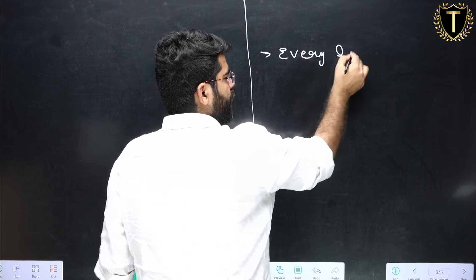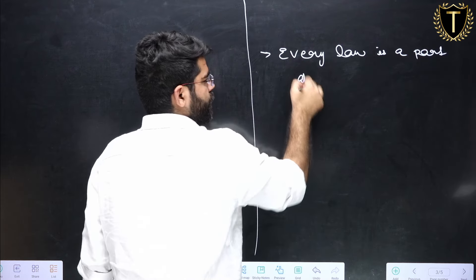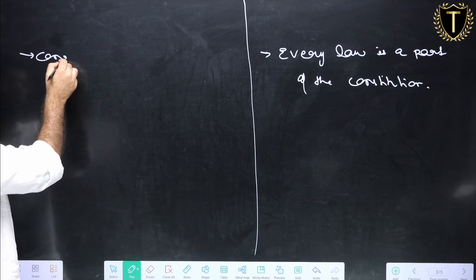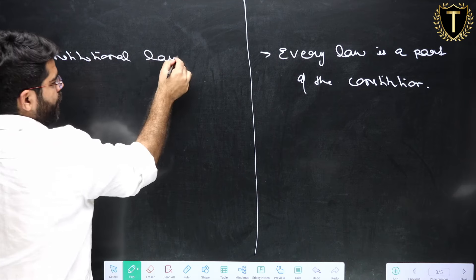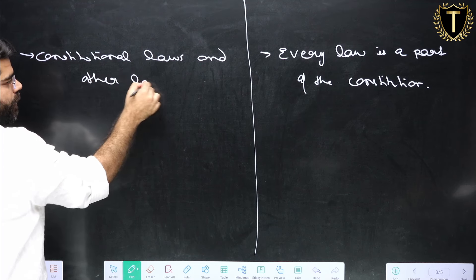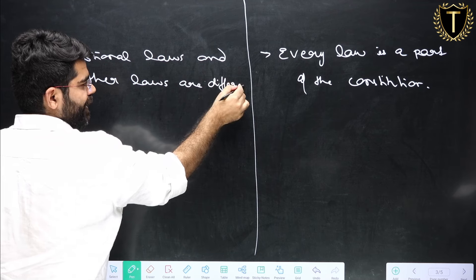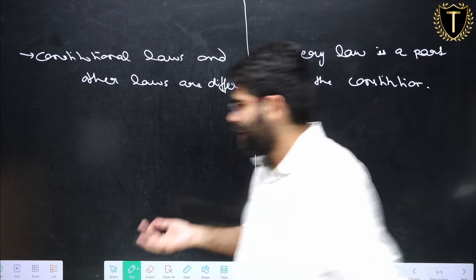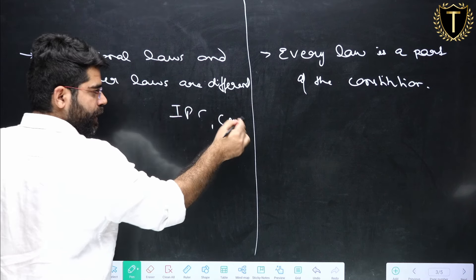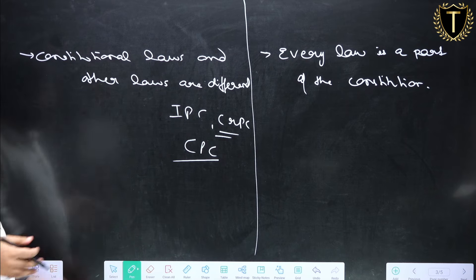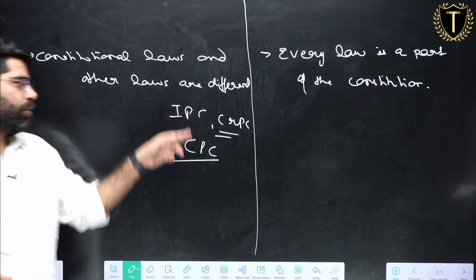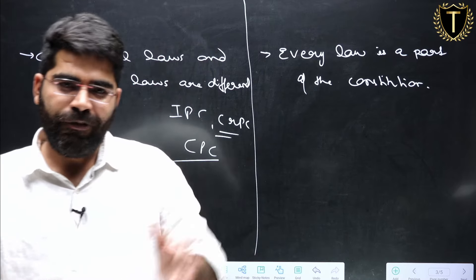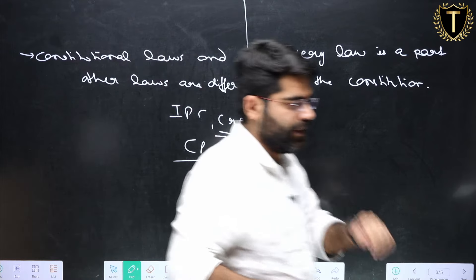This is a very important point: in an unwritten constitution, every law is a part of the constitution. But in a written constitution, constitutional laws and other laws are different. The laws which are in the constitution book are constitutional laws, and laws not in that book are other laws — for example, IPC, CRPC, and CPC each have their own separate books. In the UK there is no such separation; every law is simply part of the constitution.